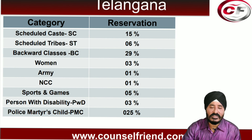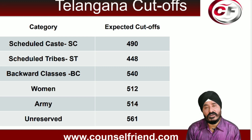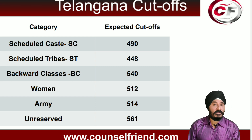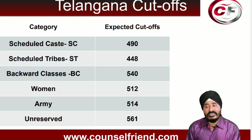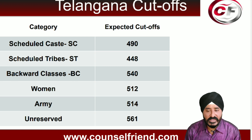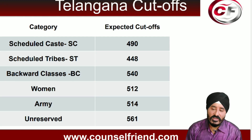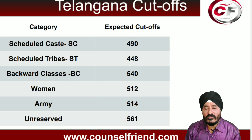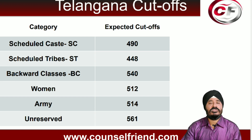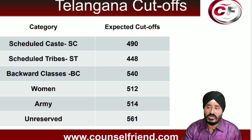Here is the expected cut-off for Telangana state for 2023. If you have got marks somewhere near these figures, you have a better chance of getting an MBBS seat in a good government medical college. For SC, marks can be up to 490. For Scheduled Tribe, up to 448. For Backward Classes, 540. For Women, 512. For Army, up to 514. For Unreserved, it might be up to 561.